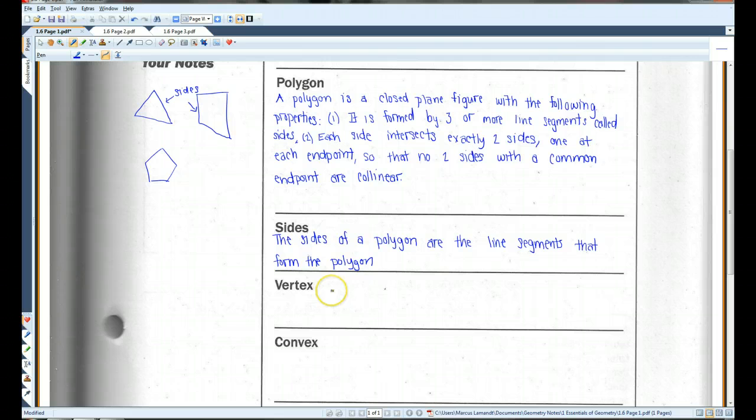The vertex, the plural of this word is vertices. The vertices are basically the corners. This is a vertex, this is a vertex, vertex, vertex. These are all vertices.